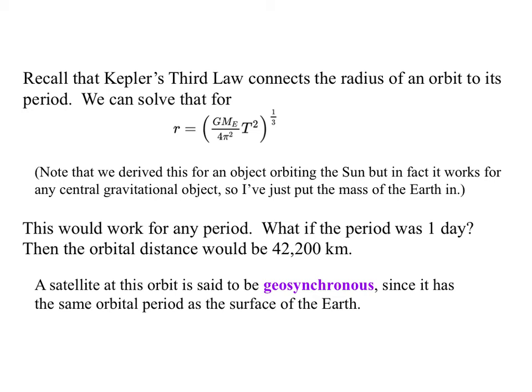It works for any period. So let's say what would happen if the period was a day. Then we would put one day, which is 86,000 something seconds, into here with all the other numbers. And we get about 42,200 kilometers or 42 million meters. And a satellite at this orbit is said to be geosynchronous, since it has the same orbital period as the surface of the earth. Geo meaning earth and synchronous meaning the same time.